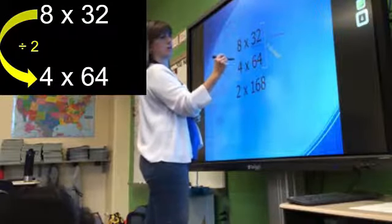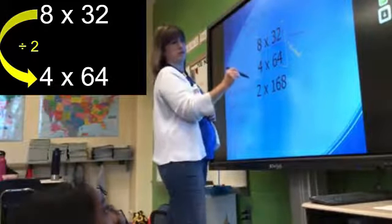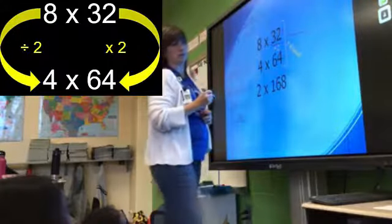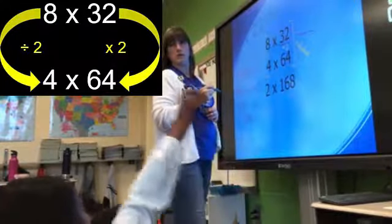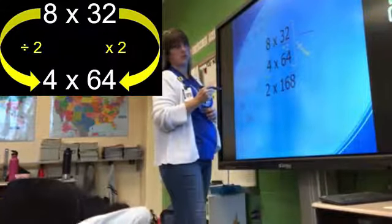And since you're dividing it by 2, the left side of the top equation, then you multiply it by 2 on the right side of that equation. And then that equals 4 times 64. So if you're multiplying them and dividing them by the same number, then the product is the same number.